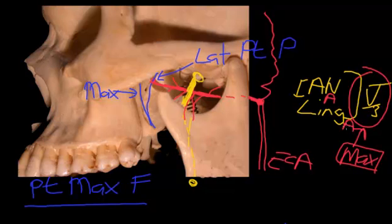There are in fact two lingual arteries — it's a bit of a complicated story. That's what happens to the maxillary artery as it runs across the infratemporal fossa.